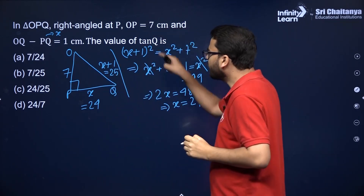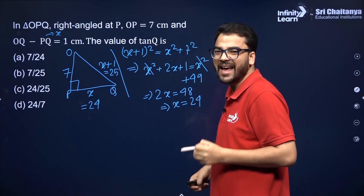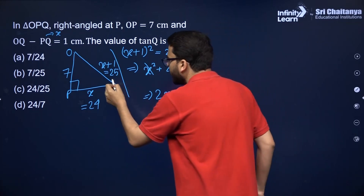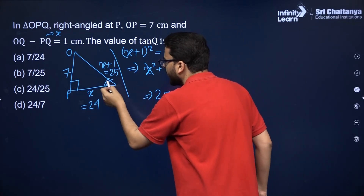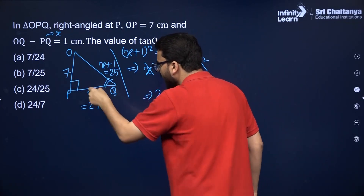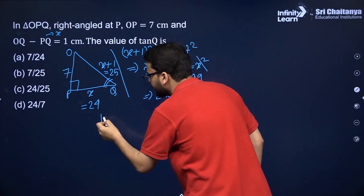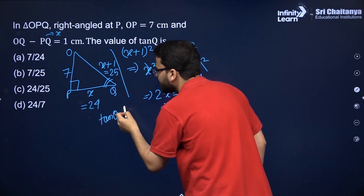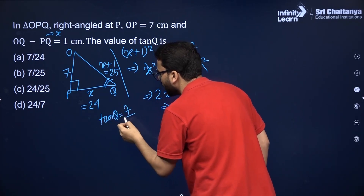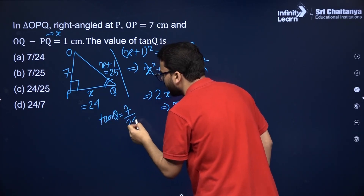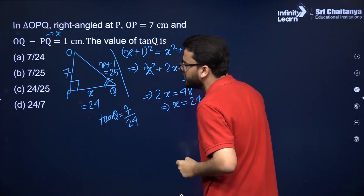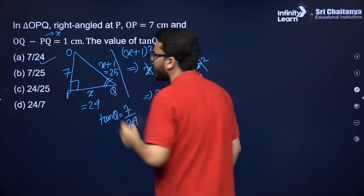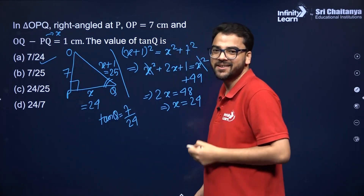Now we have to find the value of tan Q. Tan Q is perpendicular upon base, which is 7 upon 24. So that is the answer. I hope it is clear.